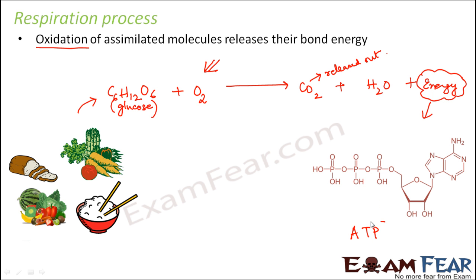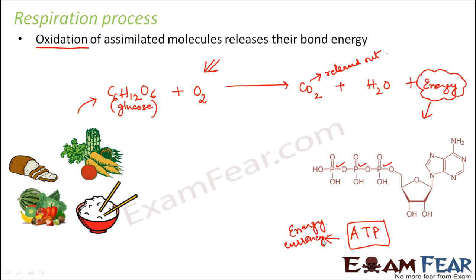ATP is nothing but adenosine triphosphate. There are three phosphate groups attached, that is why it is called triphosphate, and this part is adenosine. This ATP is like the energy currency of the cell — of each cell of our body. It might sound a little complex — what do we mean by energy currency?